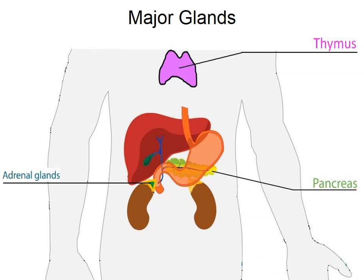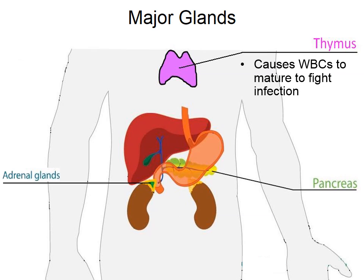Working down to the chest area, the thymus releases hormones to help white blood cells mature to fight infection. Specifically, a type of white blood cell called T cells, which are important for fighting bacteria, viruses, and pathogens. The thymus releases a hormone called thymosin which helps these T cells mature in order to fight infection.